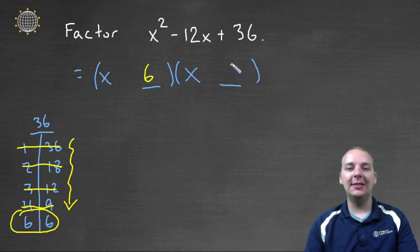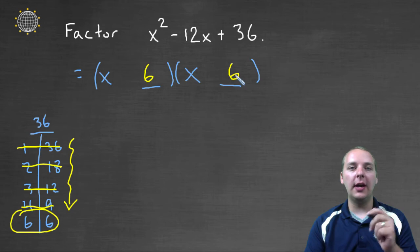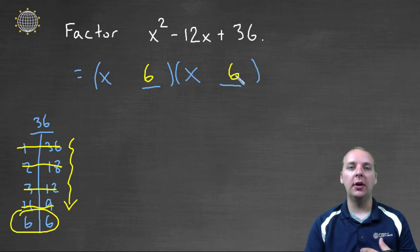Now again, I'm not saying that 6 and 6 are going to be the right answer or part of the right answer, but they're good suspects. They're a good option to try, a likely candidate to be part of the factored form.